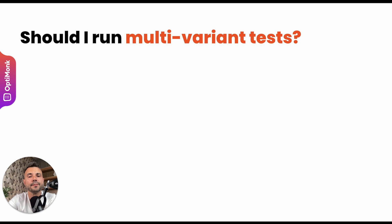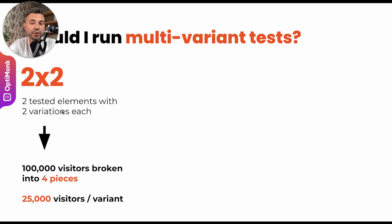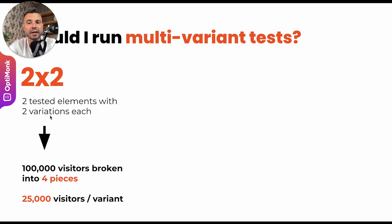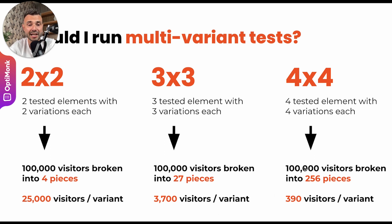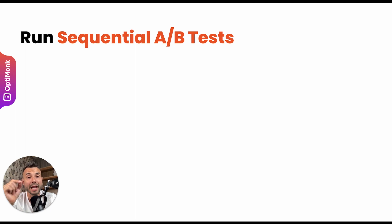Should you run multivariate tests? It depends on how much traffic you have. If you have 100,000 visitors a month — which is quite a lot — and you test just two elements with two versions each, it splits your traffic into four pieces, resulting in 25,000 visitors per variant, which is still okay. But if you test three elements with three different variations, it breaks visitors into 27 pieces, resulting in only 3,700 visitors per variant. With four elements and four variations each, traffic fragments into 256 pieces with only 400 visitors per variant, which doesn't make sense. Multivariate testing is really for larger enterprises. For small businesses, running sequential A/B tests is recommended instead.